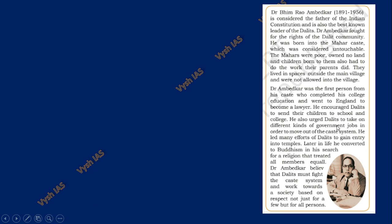Dr. Ambedkar was the first person from his caste who completed college education and went to England to become a lawyer. He encouraged Dalits to send their children to school and college, and urged Dalits to take on different kinds of government jobs in order to move out of the caste system. Even now if you go to eastern states like Odisha or Jharkhand, the majority trying for government jobs are from Scheduled Caste or lower caste people, because the mentality still persists: if you want to earn respect in your community and have a better life, you have to get a government job. He also led many efforts of the Dalits to gain entry into temples. Temple entry movement is a very important UPSC topic — key names are Ambedkar and Sree Narayana Guru in Kerala.